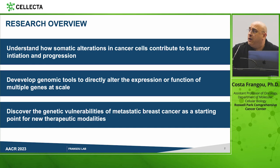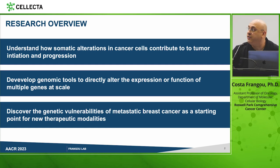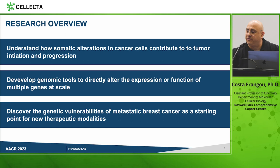Over the past couple of years, my group in collaboration with Alex Chenchik and his R&D team at Selector have developed a high-throughput in vivo functional genomics platform that allows us to directly alter the expression or function of multiple genes simultaneously. This uniquely enables us to assign different cancer cell phenotypes to specific genotype-dependent perturbations.